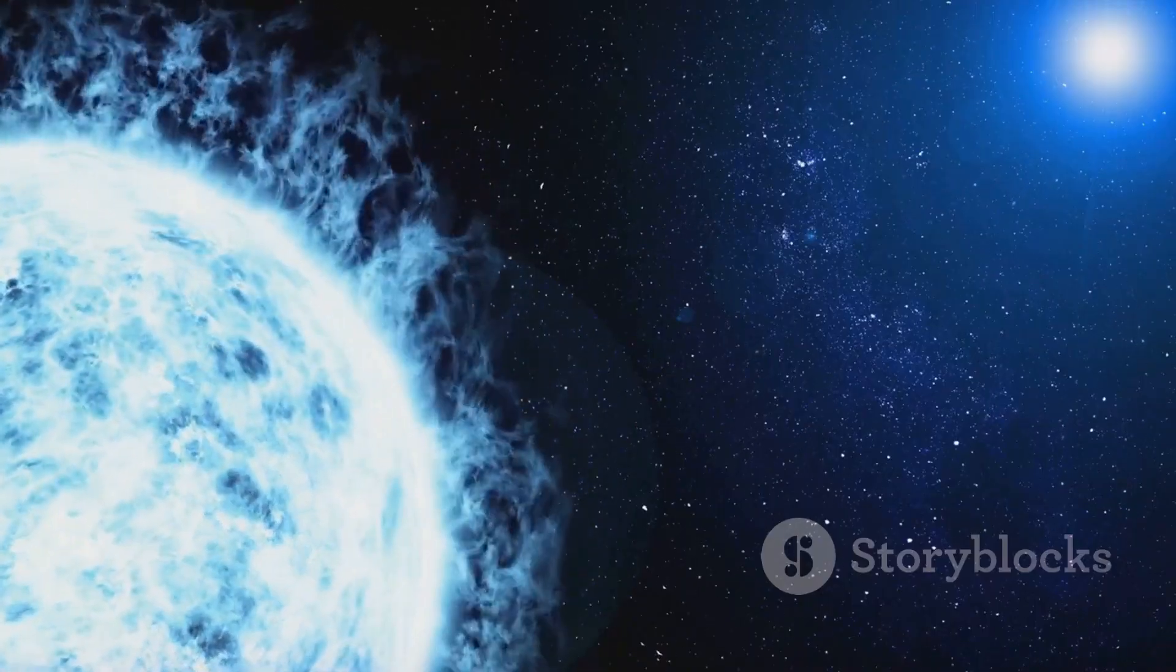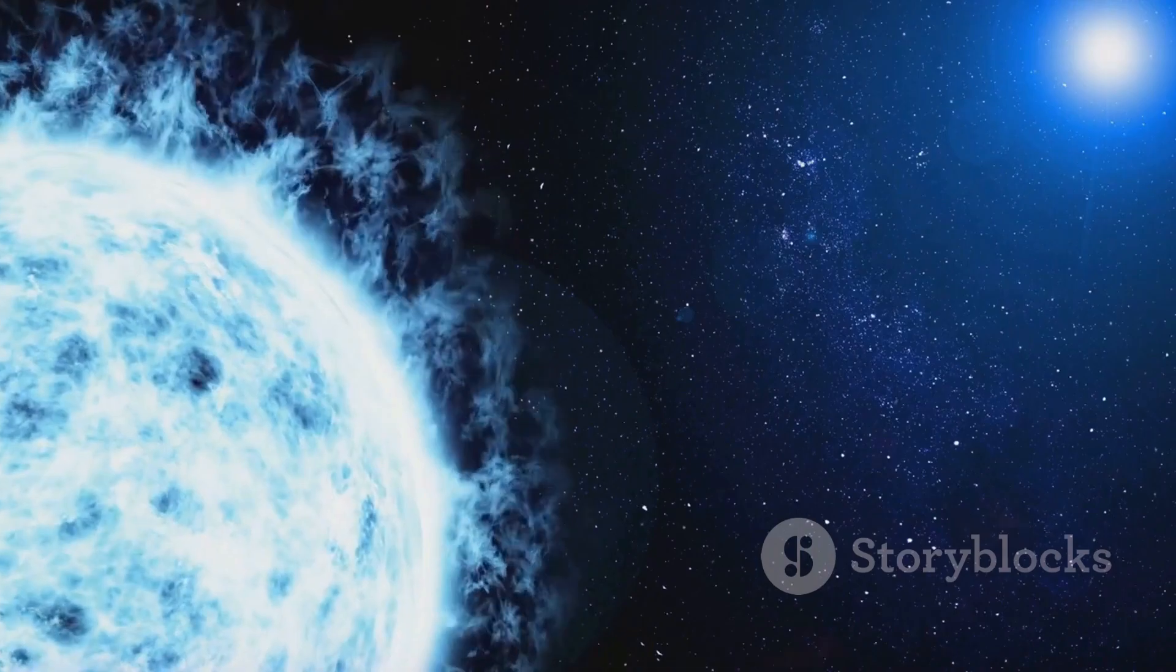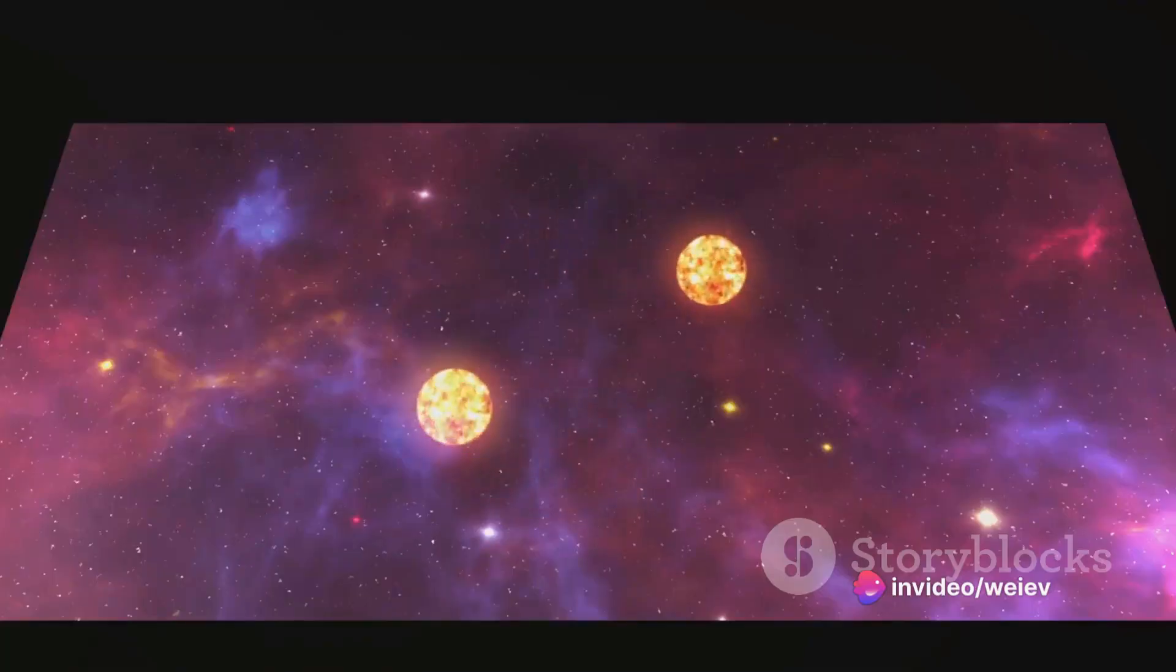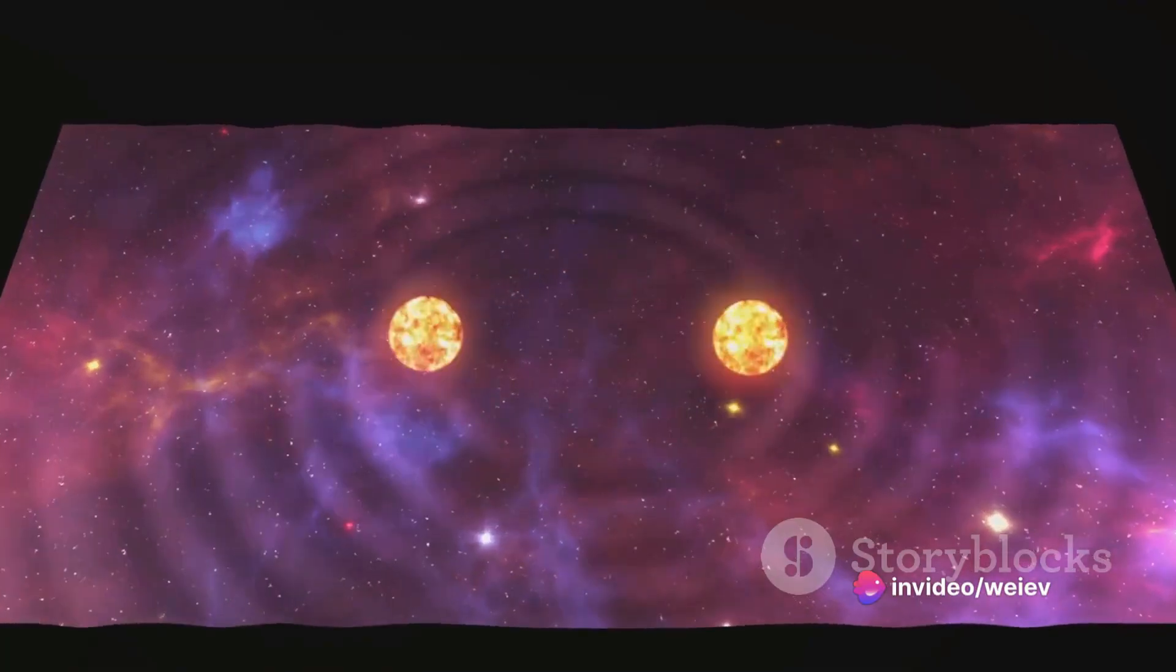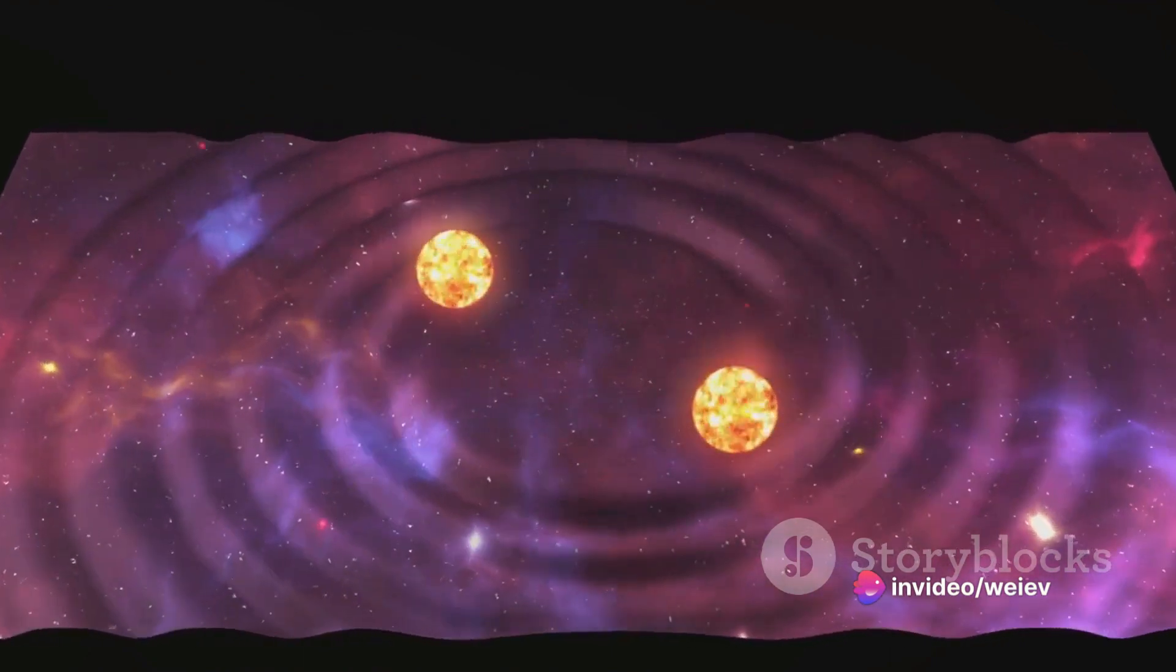Picture this: A sugar cube sized piece of neutron star would weigh as much as a mountain. This density results in a gravitational pull so strong a dropped object would hit its surface in a microsecond.